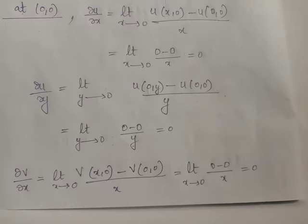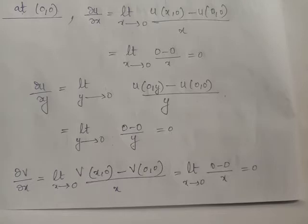u(x,0) is obtained by substituting x = x and y = 0 in the given function f(z) = √|xy|, which gives u(x,0) = 0. Therefore ∂u/∂x = limit as x tends to 0 of (0 minus 0) divided by x, which equals 0.